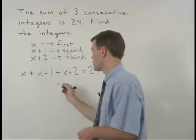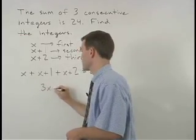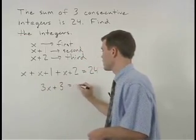Simplifying on the left, we get 3x plus 3 equals 24.